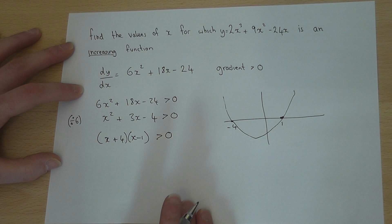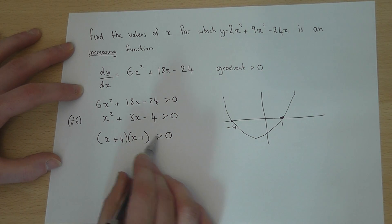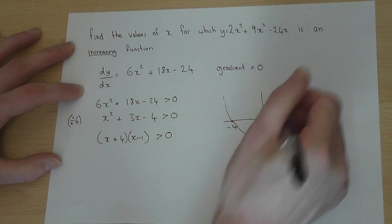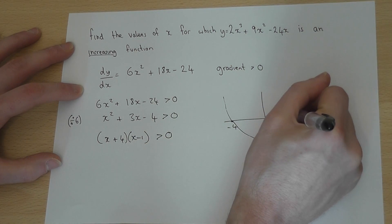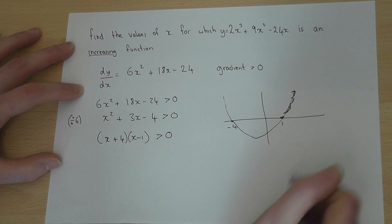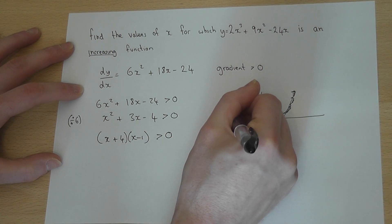The question is saying for what values is this graph bigger than zero, in other words when is it above the x-axis. If we look at the graph, it's above the x-axis here and it's above the x-axis here.